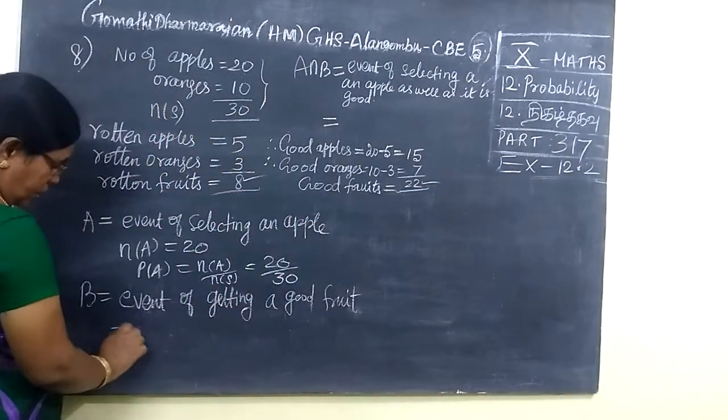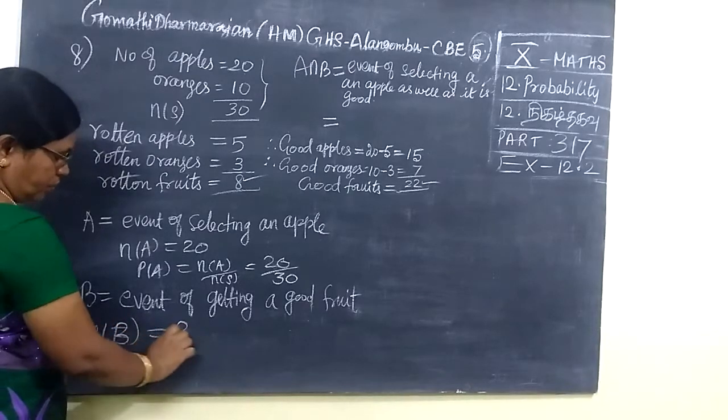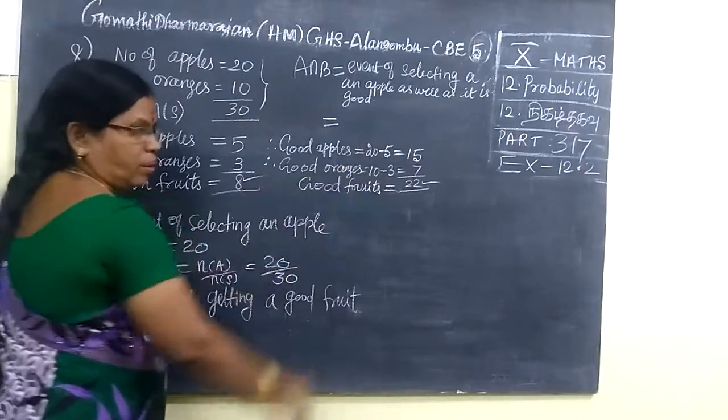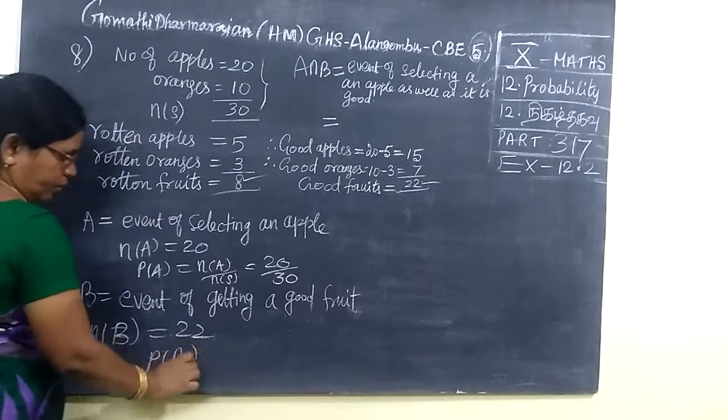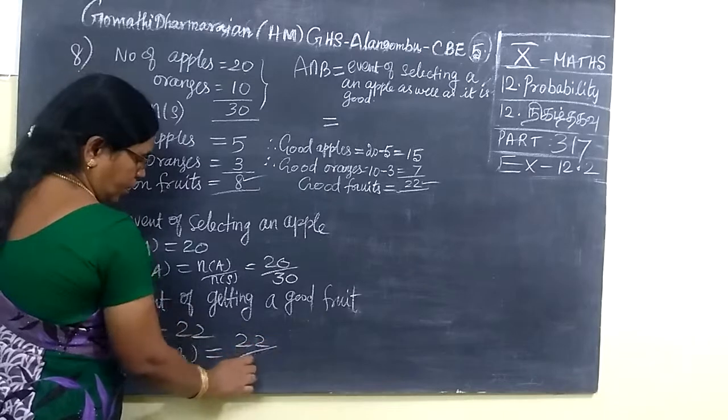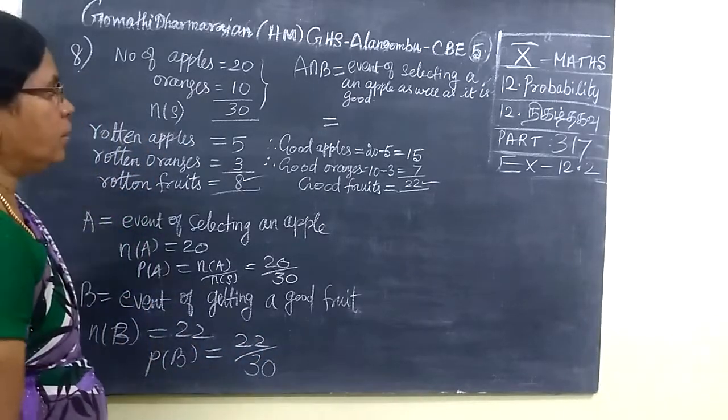So N of B, good fruit is equal to 22. Now I am going to separate the fruit. Therefore, P of B equal to N of B by N of S equal to 22 by 30.